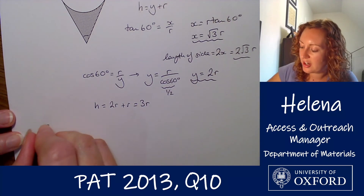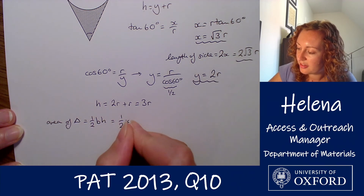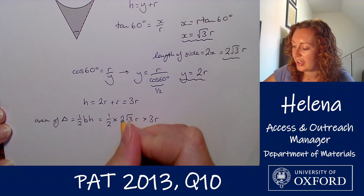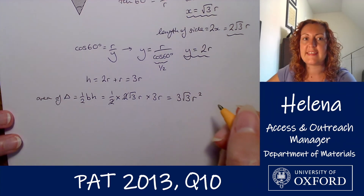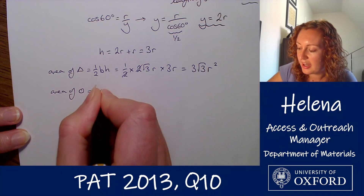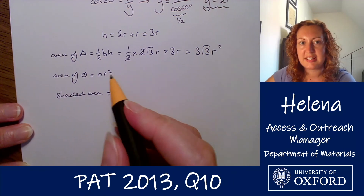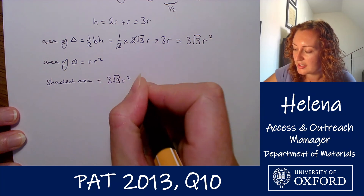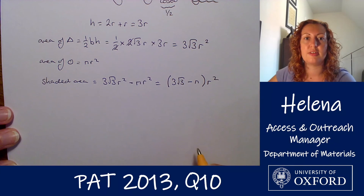So the area of the smaller triangle is ½ × base × height = ½ × 2√3r × 3r = 3√3r². The area of the inner circle with radius r is πr². So the smaller shaded area — triangle minus circle — is 3√3r² − πr², which tidied up into brackets is (3√3 − π)r².